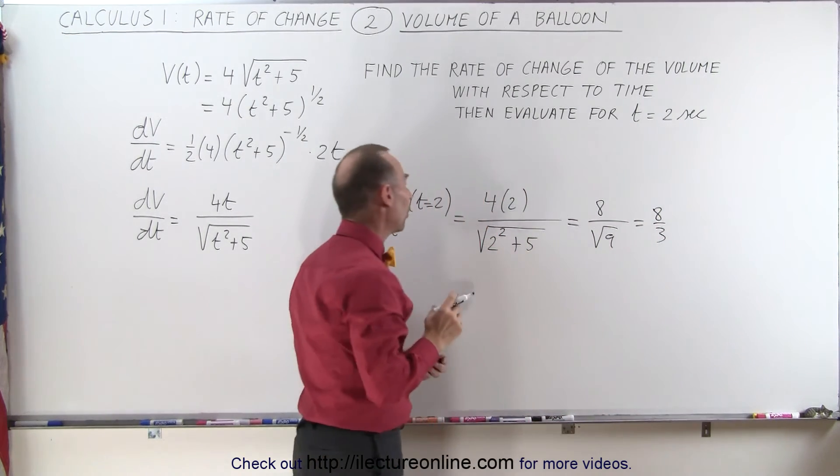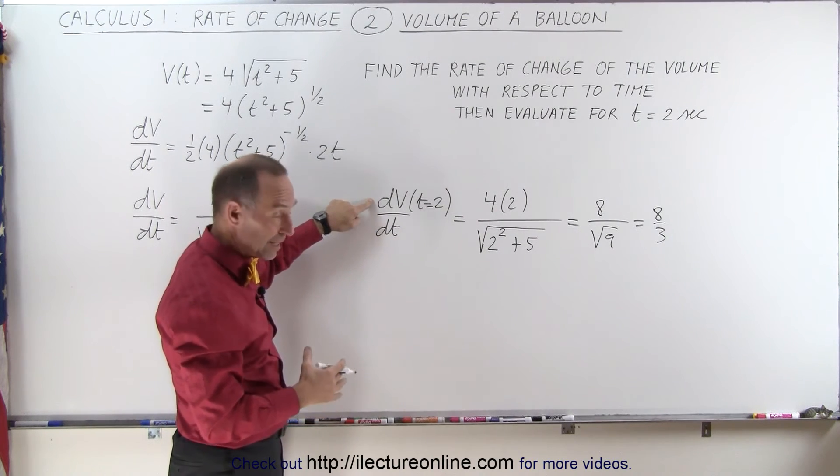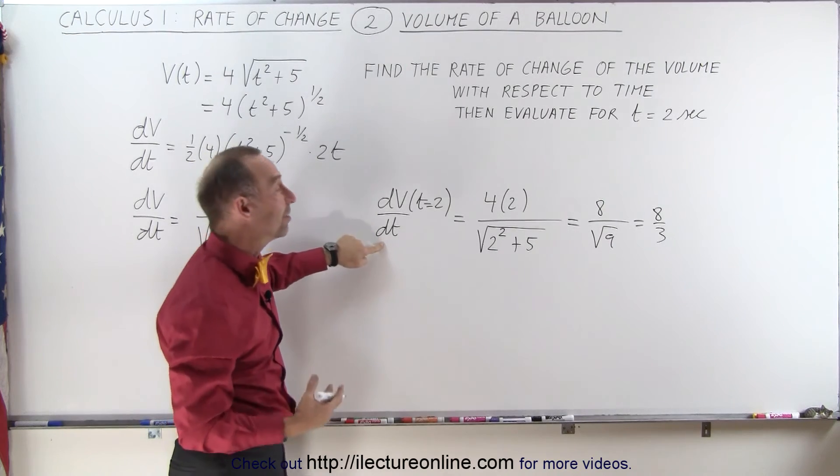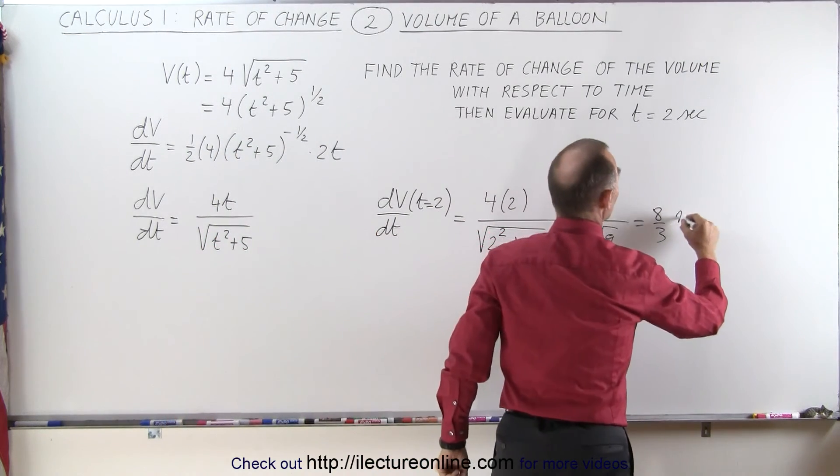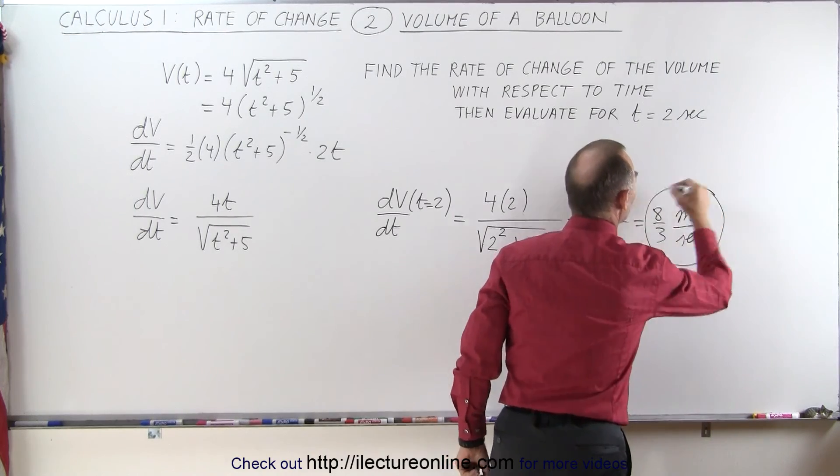And now what are the units? Well, the units for volume would be cubic meters. The units for time would be seconds, so the units would be cubic meters per second if this was in standard units.